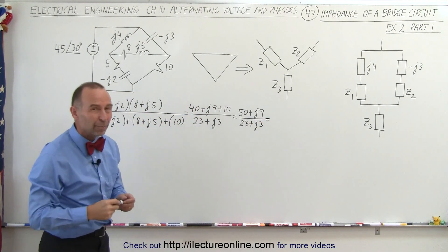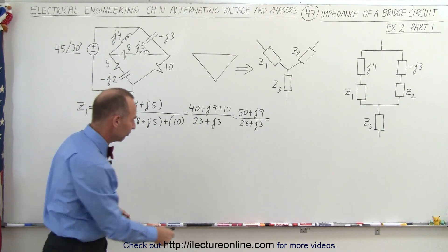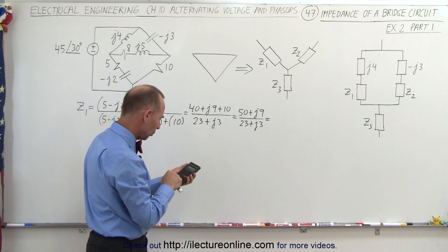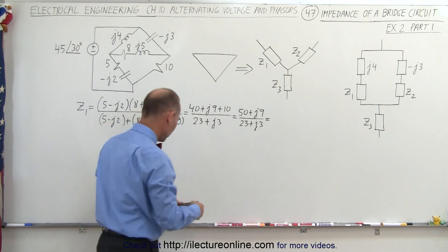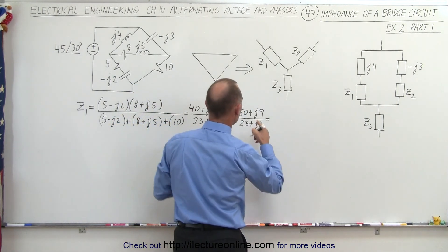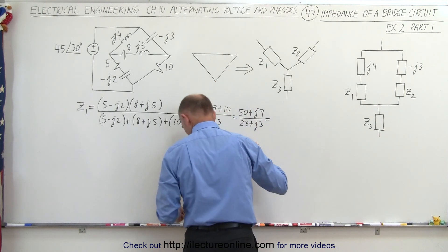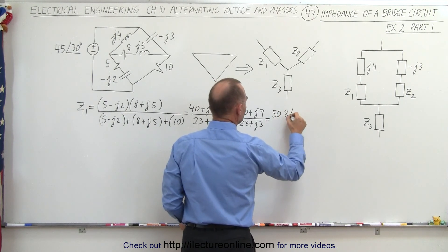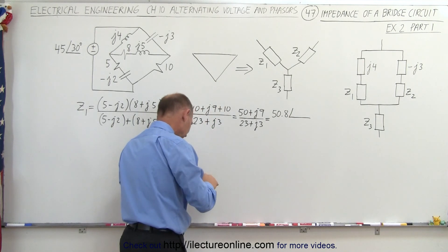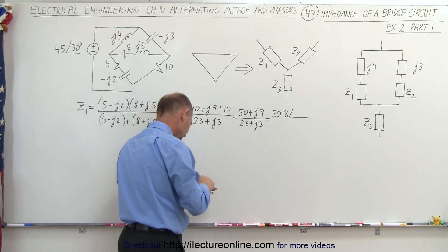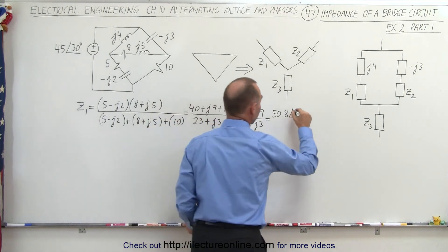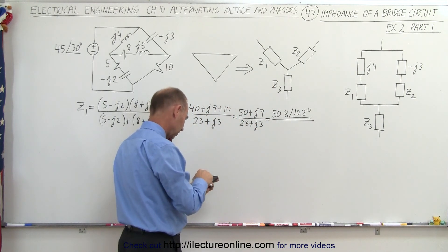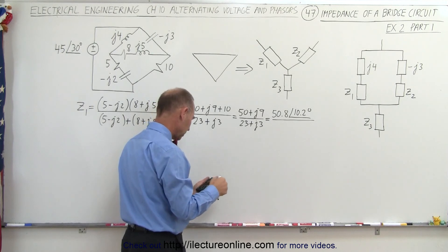When we want to divide that, it's better to change it into the magnitude and phase angle format — that makes it easier to divide. So we have the square root of (2500 plus 81), which gives us 50.8 for the magnitude. The phase angle is the inverse tangent of (9 divided by 50), which is 10.2 degrees. For the denominator, we have the square root of (23 squared plus 9), which gives us 23.19.